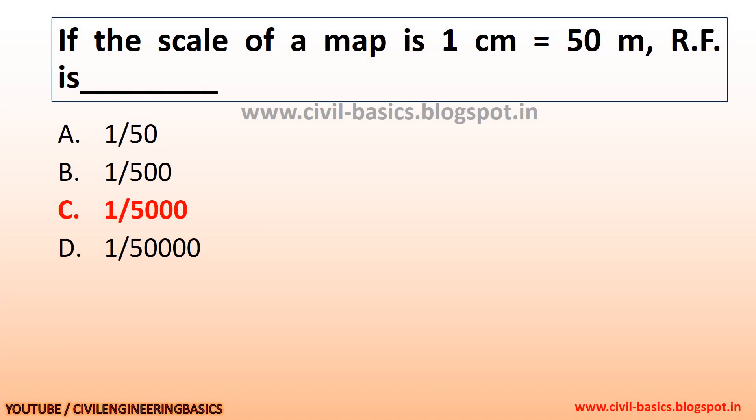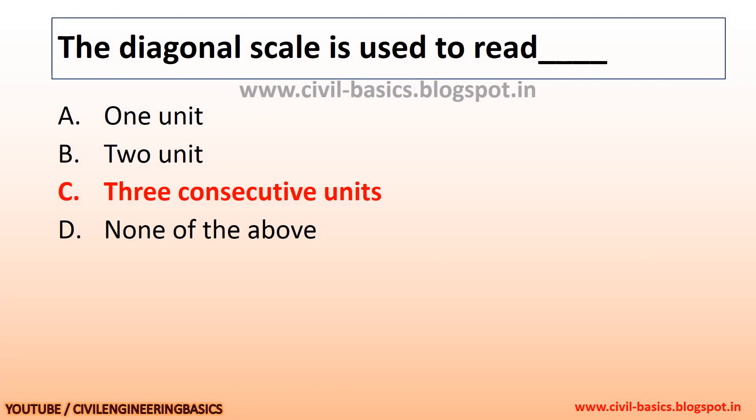If the scale of a map is 1 cm equals 50 m, it represents a representative fraction. The diagonal scale is used to read three consecutive units.